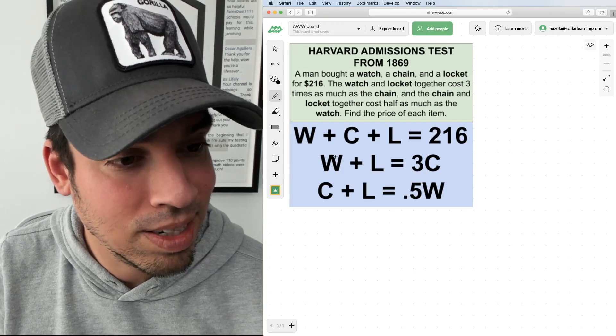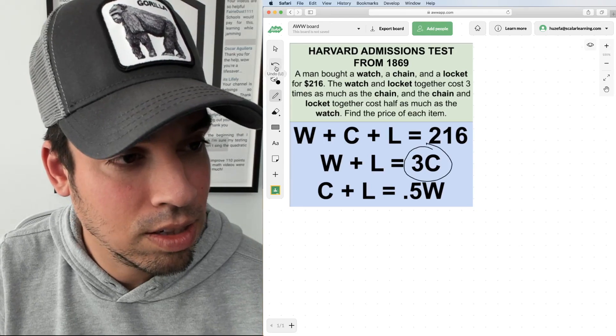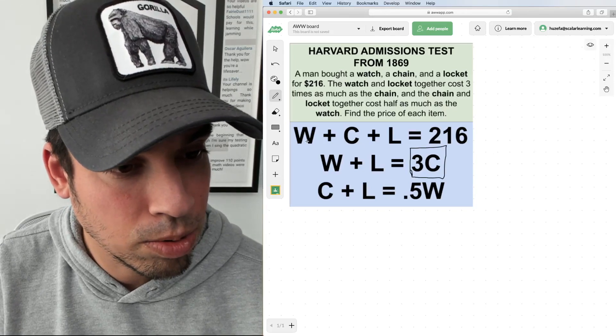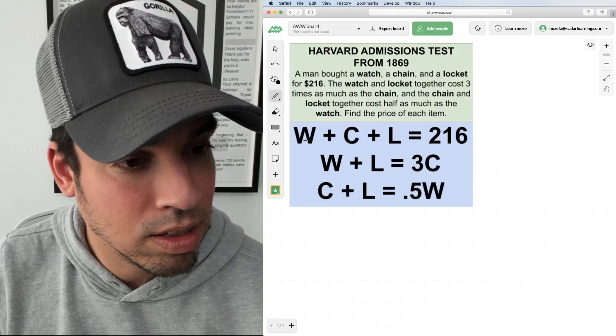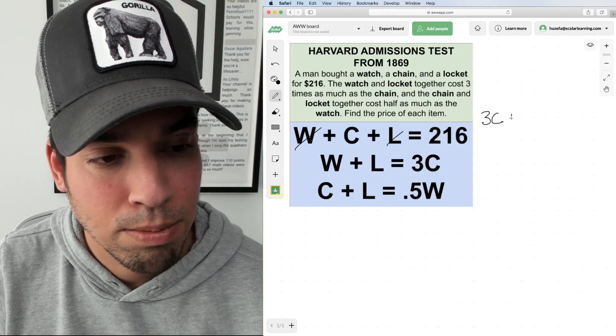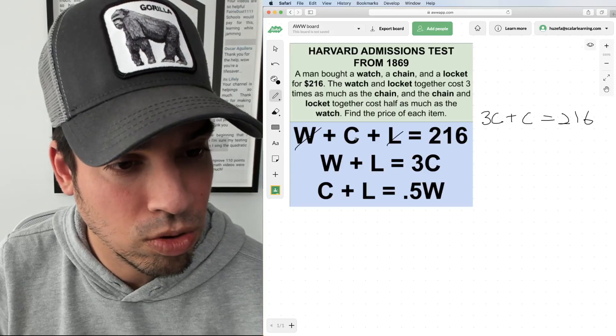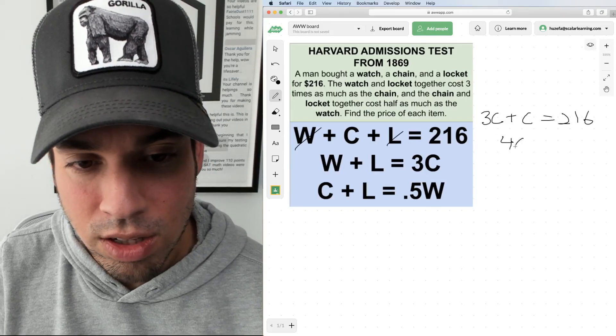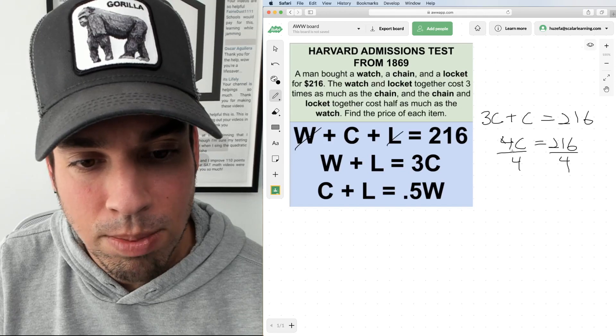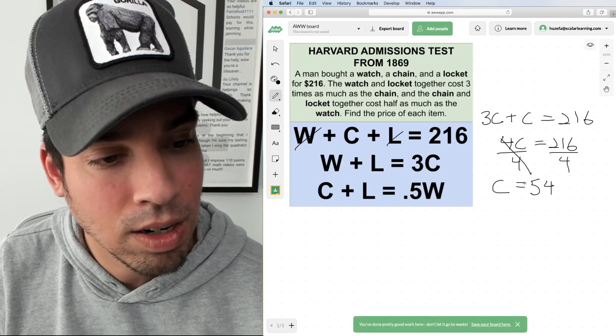I've got W plus L, meaning watch plus locket, equals 3C. This is an amazing opportunity to do a substitution because I can replace W and L in this equation with 3C. So I can make it 3C plus C equals 216. Now these are common terms, I can add those together: 4C equals 216. Divide by 4 and the cost of the chain is 54.